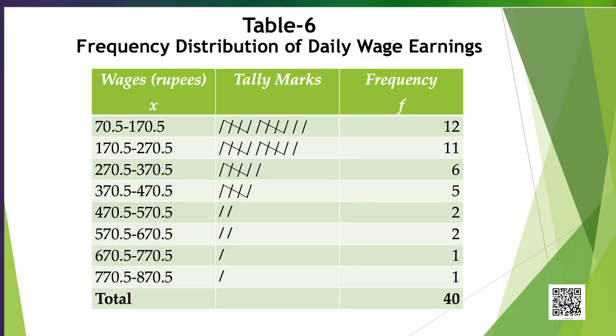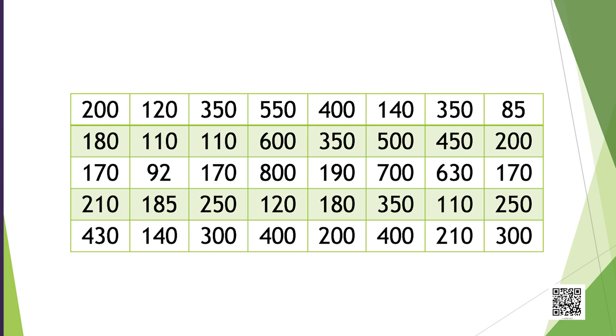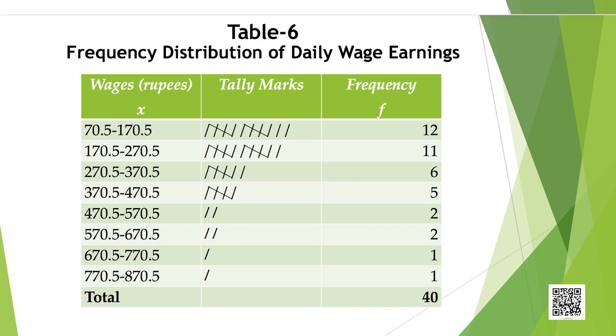Let us take another illustration to construct the frequency distribution. Look at Table 6 on the screen. Here the data on daily wage earnings in rupees of 40 individuals are given. We may treat the variable daily wage earnings as continuous. The maximum wage rate is rupees 800 and the minimum is rupees 85. Thus, the range R = 715. Let us choose the width of class intervals as h = 100 and specify the classes as 70.5 to 170.5, 170.5 to 270.5, up to 770.5 to 870.5. You can see how the frequency distribution is shown in Table 6 on the screen.